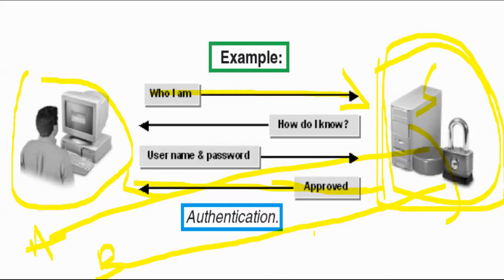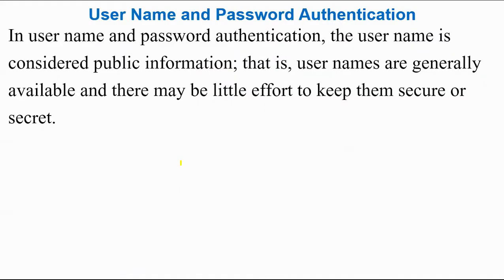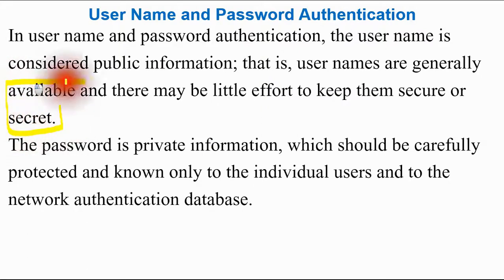In username and password authentication, the username is considered public information — usernames are generally available and there may be little effort to keep them secret. You can create a more secret username compared to default ones like 'admin' or 'administrator' if you have sensitive information. Password, on the other hand, is private information which should be carefully protected and known only to the individual user and to the network authentication database.